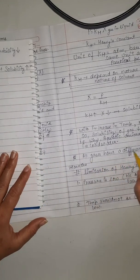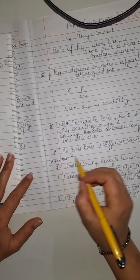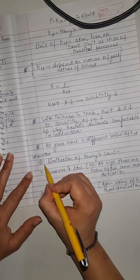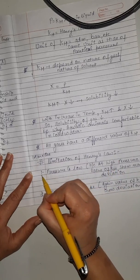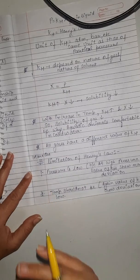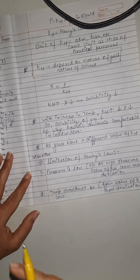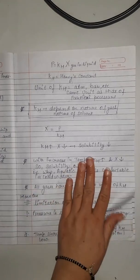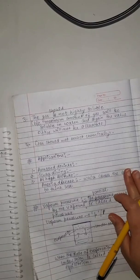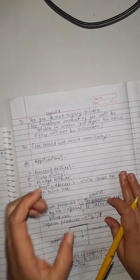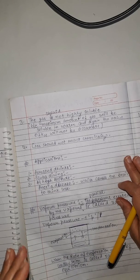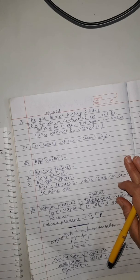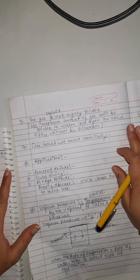All gases have a different value of KH. Now come to the limitations of Henry's Law. First, pressure should be low, because at high pressure the value of KH shows many deviations. Second, temperature should not be low, as at low temperature KH shows maximum deviation. Third, the gas should not be highly soluble, as then KH will not be accurate. Fourth, the gas should not react chemically.